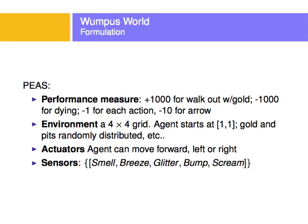Let's look at the PEAS formulation. The performance measure: 1,000 points for walking out with gold, negative 1,000 if you die, negative 1 for each action, and negative 10 for an arrow thrown. If you throw the arrow and kill the Wumpus you have a higher chance of getting the gold, but if you throw and do not kill, there's a significant penalty. The negative 1 per action means we want to find the gold as quickly as possible, in the least number of moves.